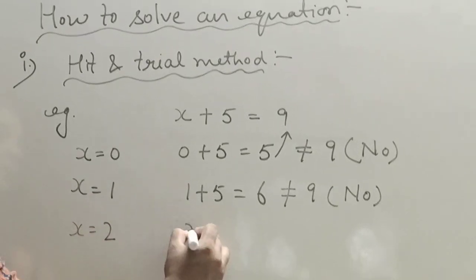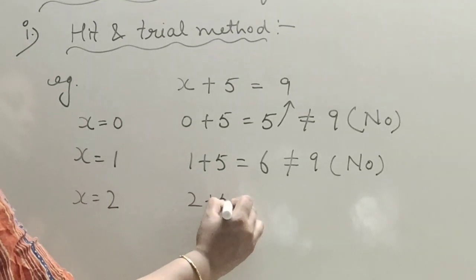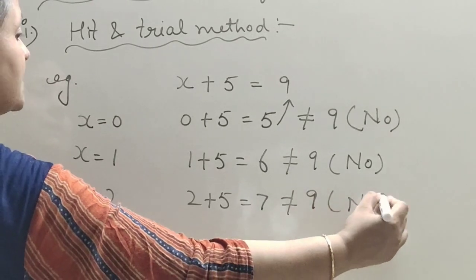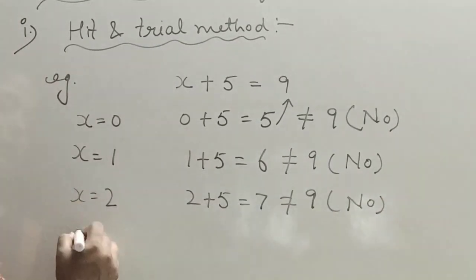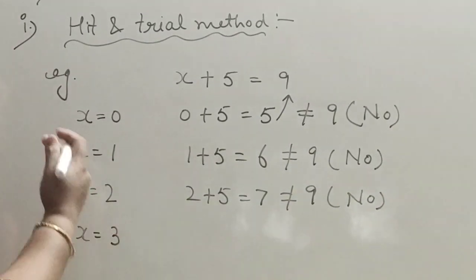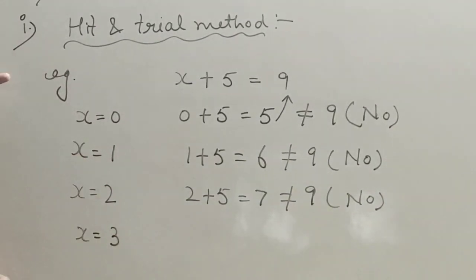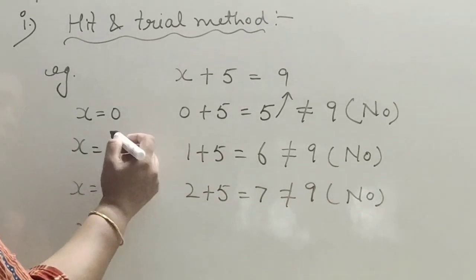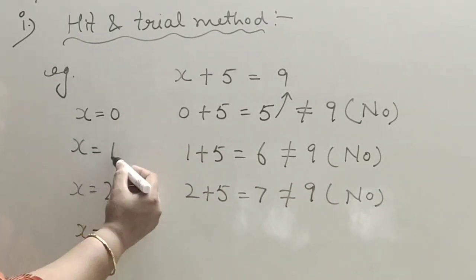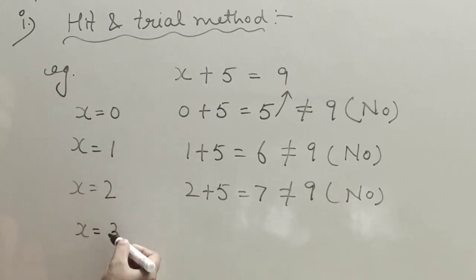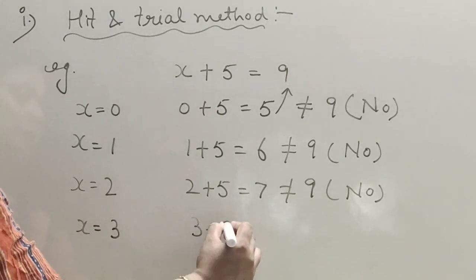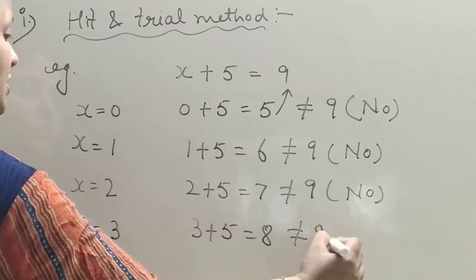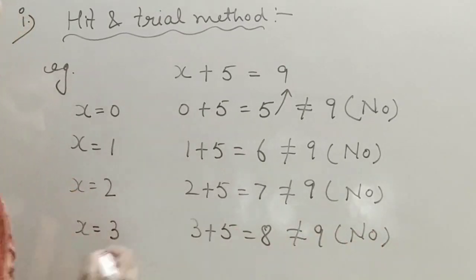We continue trying: x equals 2 gives 2 plus 5 equals 7, not 9. Then x equals 3 gives 3 plus 5 equals 8, still not the solution. We keep trying different values — 0, 1, 2, 3 — until we reach the answer.